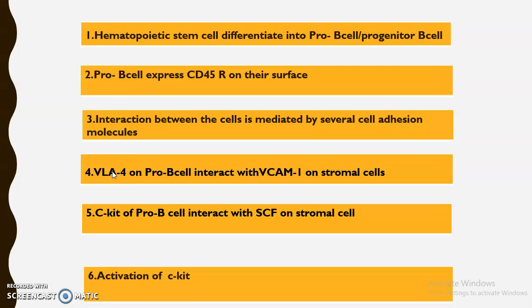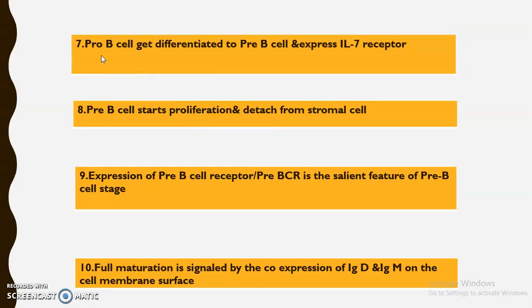The main adhesion molecules involved are VLA4 on the pro B cell, which interacts with VCAM1 on the stromal cells. The second set of adhesion molecules are C-kit on the surface of the pro B cell, which interacts with SCF, stem cell factor, on the stromal cell. This interaction activates C-kit and produces a signal so that the pro B cell gets differentiated into a pre B cell.